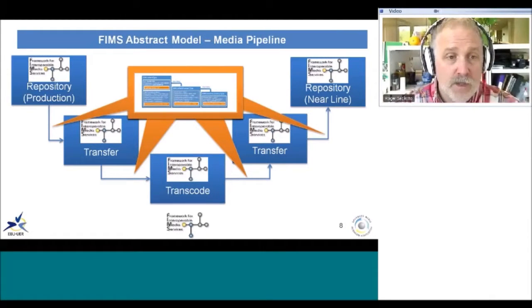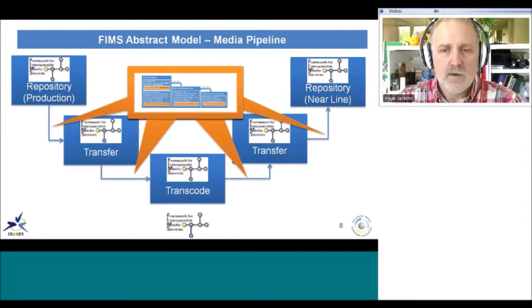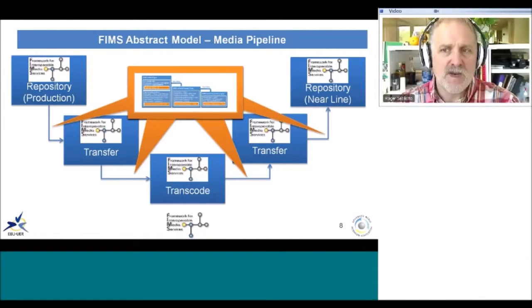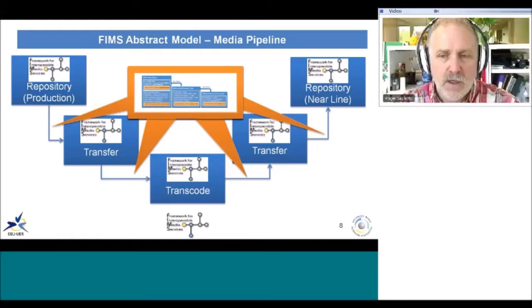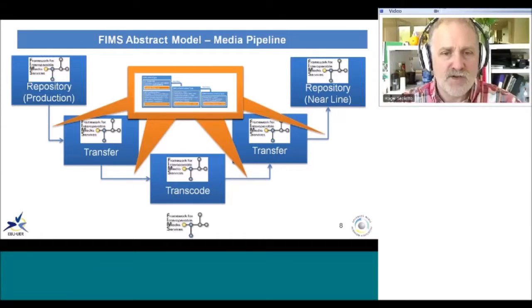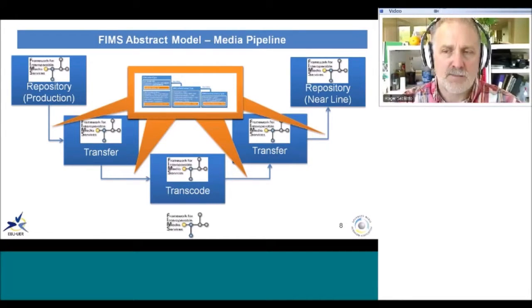For example, consider a workflow where content lives in a repository. You want to extract some content, move it, and transcode it — say, compress it to proxy resolution to make it more easily streamable. You might also want to move it to a nearline repository for short-term archival. All these different systems can be chained together: take the output of the transfer, hand it to the transcode, take the output of the transcode, hand it to another transfer, and make that available to your nearline repository. This is a powerful model for making complex workflows simpler.